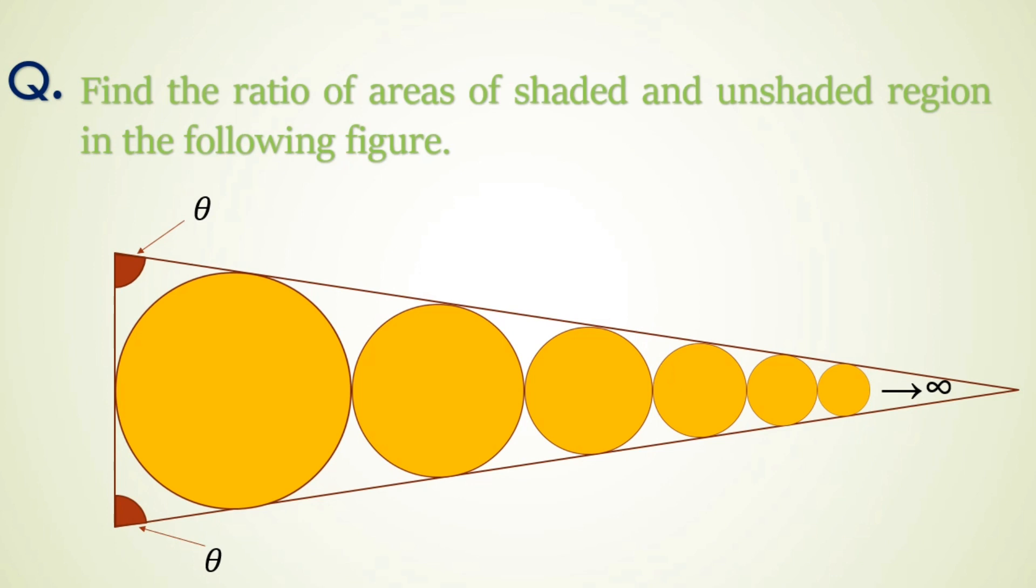Equal angles of the isosceles triangle are given theta. Here we have to calculate the ratio of areas of shaded region and unshaded region. If you have not tried this question yet you can pause the video for more time.